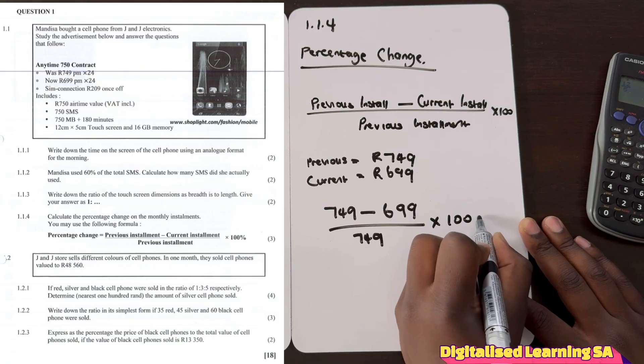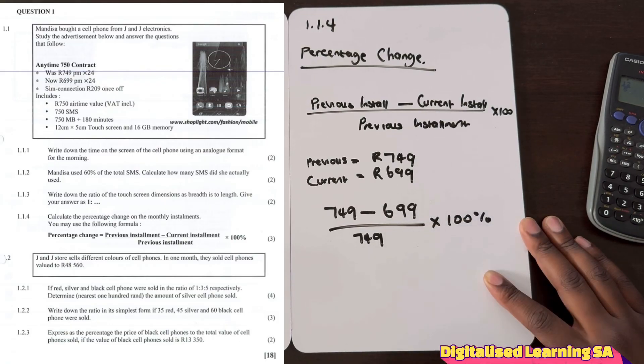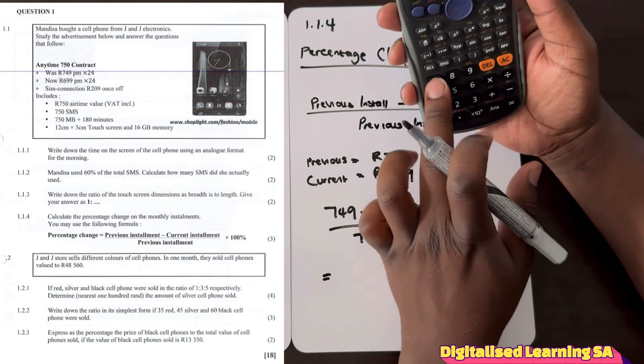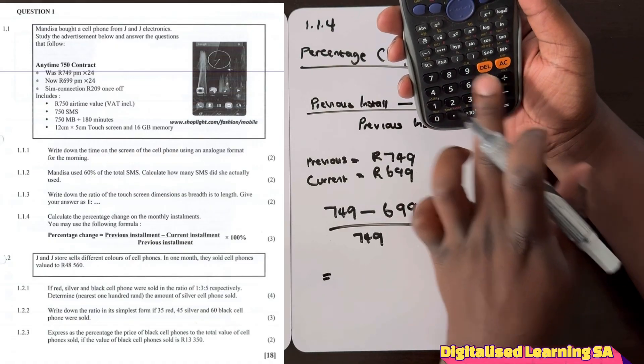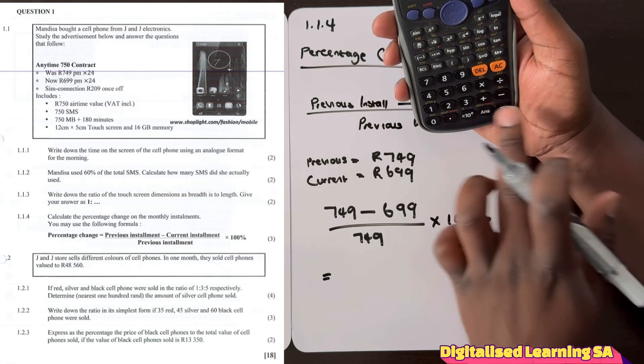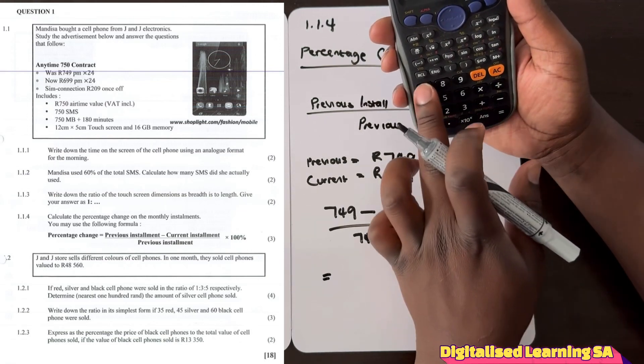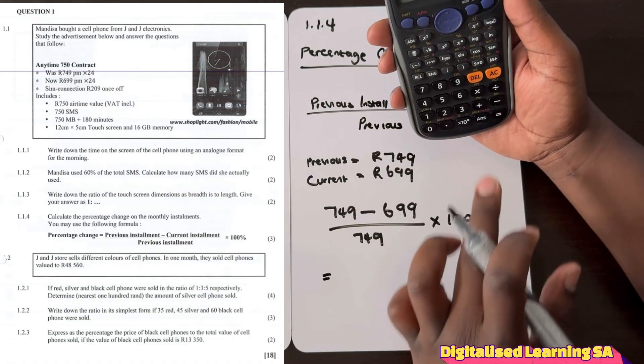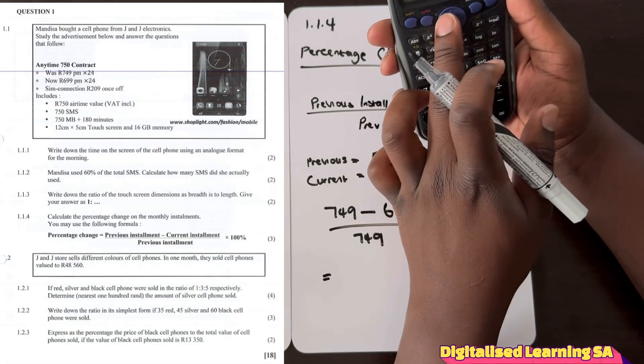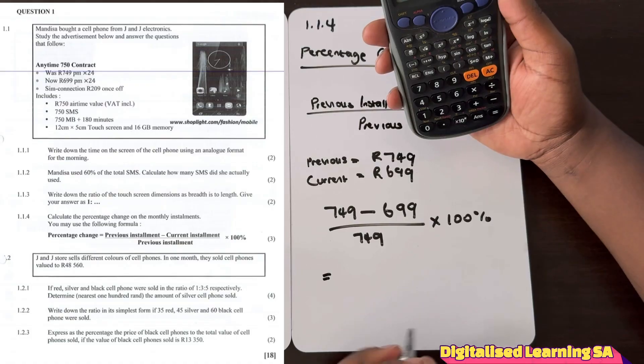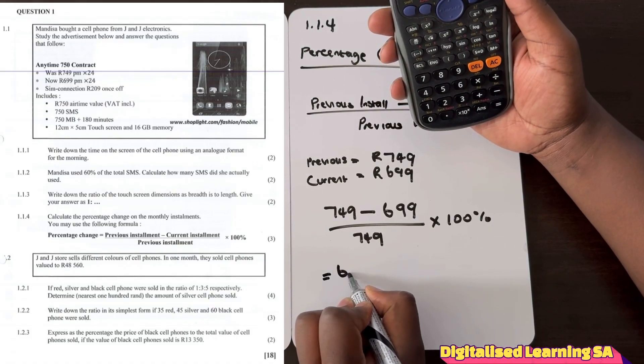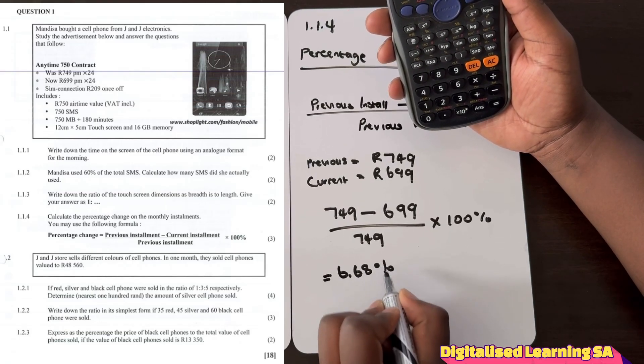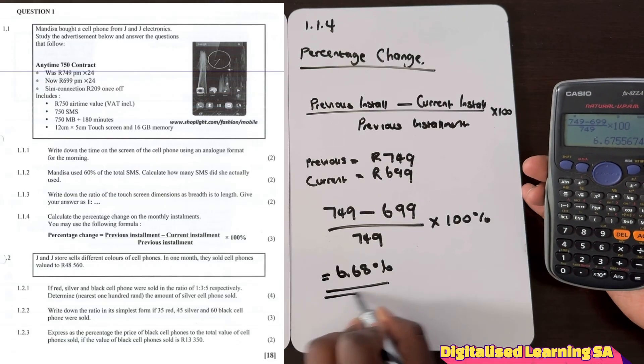Multiplied by 100 percent. So if we take this and plug it on our calculator, let's do that. We will get 749 multiplied by 100 percent, we will get 6.68 percent. So this is our percentage change.